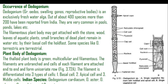First of all, the occurrence of Oedogonium. The word Oedogonium means in Greek: 'oedo' means a swelling or a bulk-like structure, and 'gonos' means a reproductive body. That is why Oedogonium is a freshwater alga. Out of 400 species found worldwide, 200 species have been reported from India, and they are very common in pools, ponds and lakes.